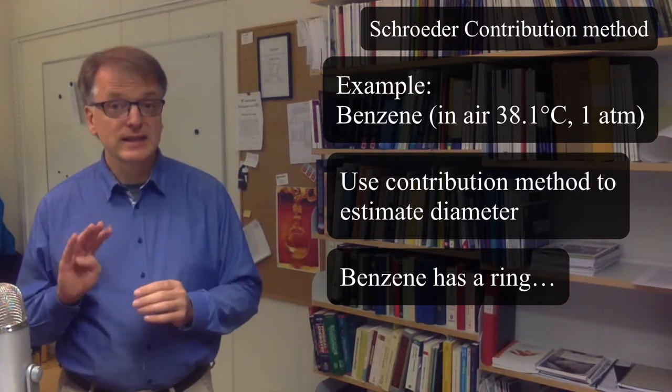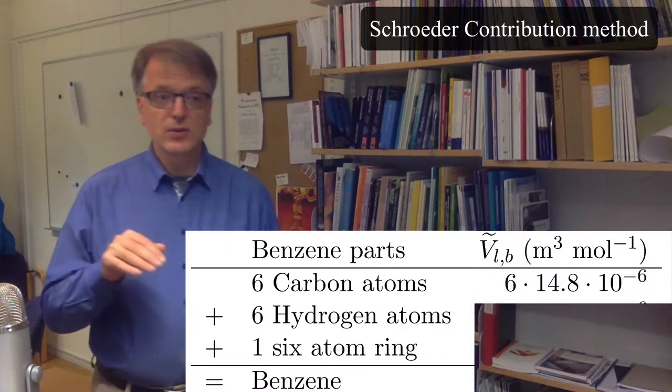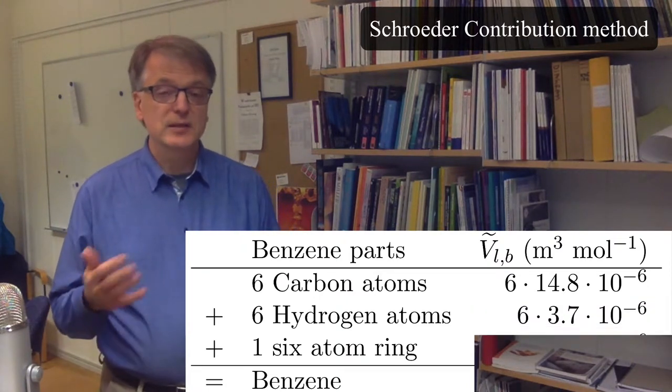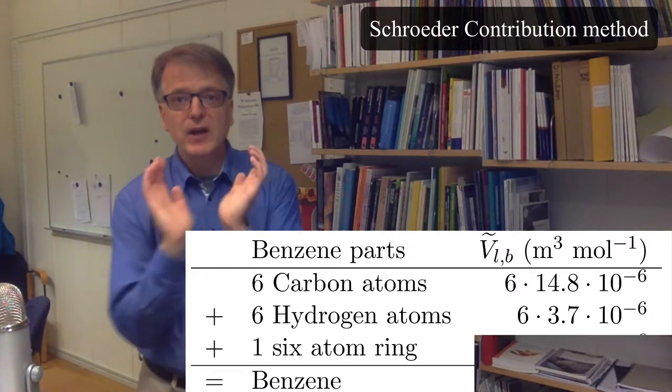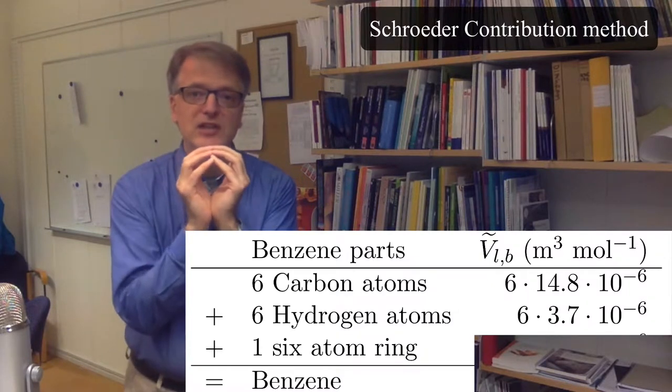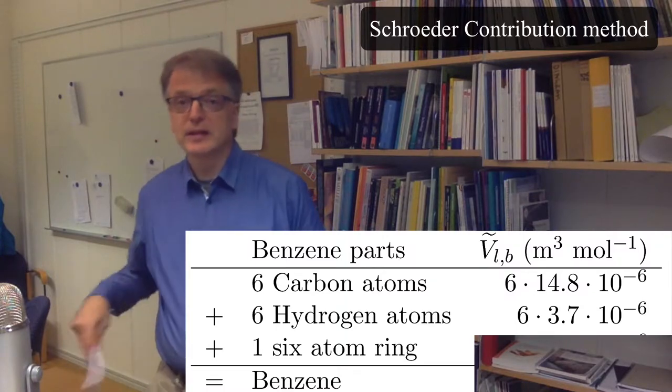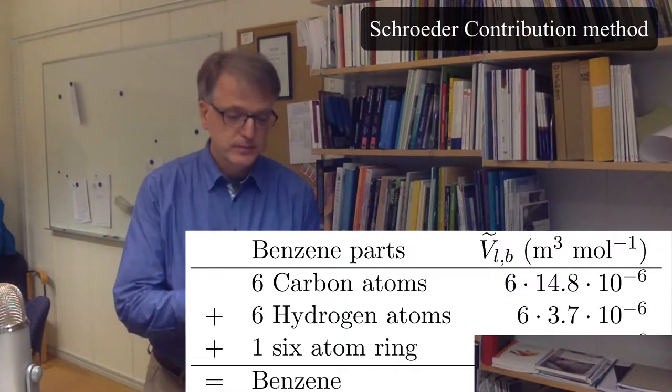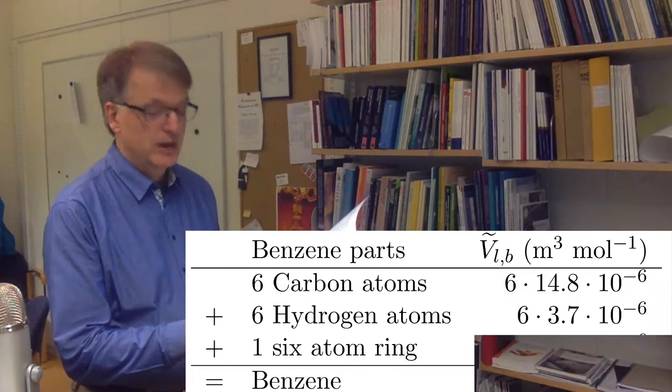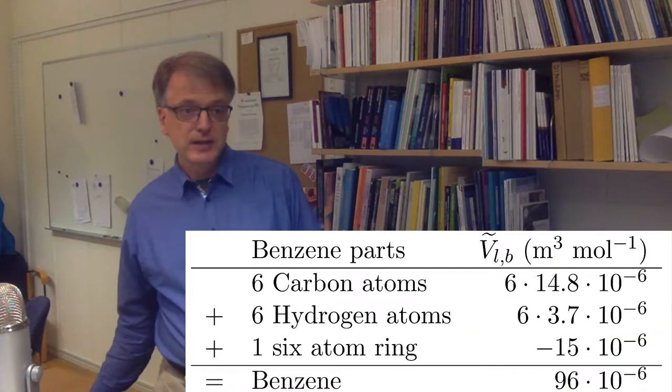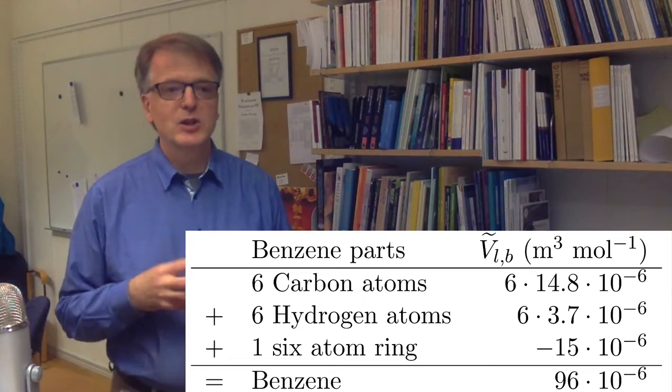Benzene consists of six carbon atoms and six hydrogen atoms. So it's six times carbon and six times hydrogen. So six times 14.8 and six times 3.7. But then there is a ring. And if you have a ring, then that actually takes up less space than if you don't have a ring. And you look up that in the table and you see that a cyclic group that has six elements, you take away 15. So you take away 15. And then we get 96 times 10 to the power minus 6 cubic meters per mole.